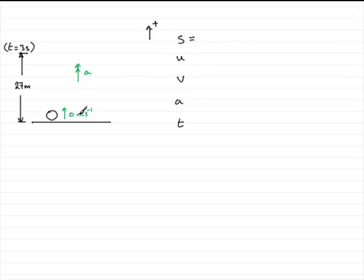Well S, the displacement from here to here in three seconds was 27 meters and U, the initial velocity was zero so put that in. As for the final velocity up here, we don't want that, we don't need it so forget about that. Acceleration, well we need that. Time, well it took three seconds to go from here up to here, so that's three.